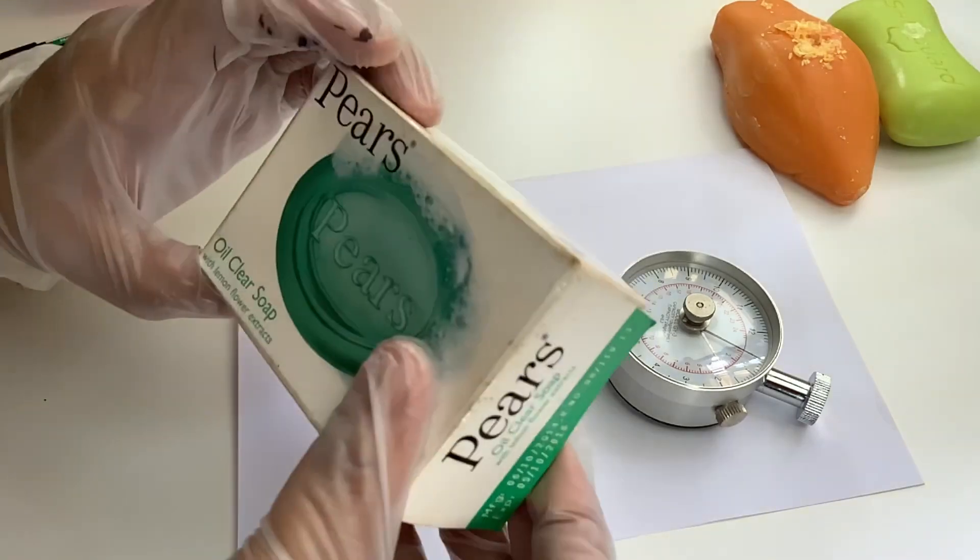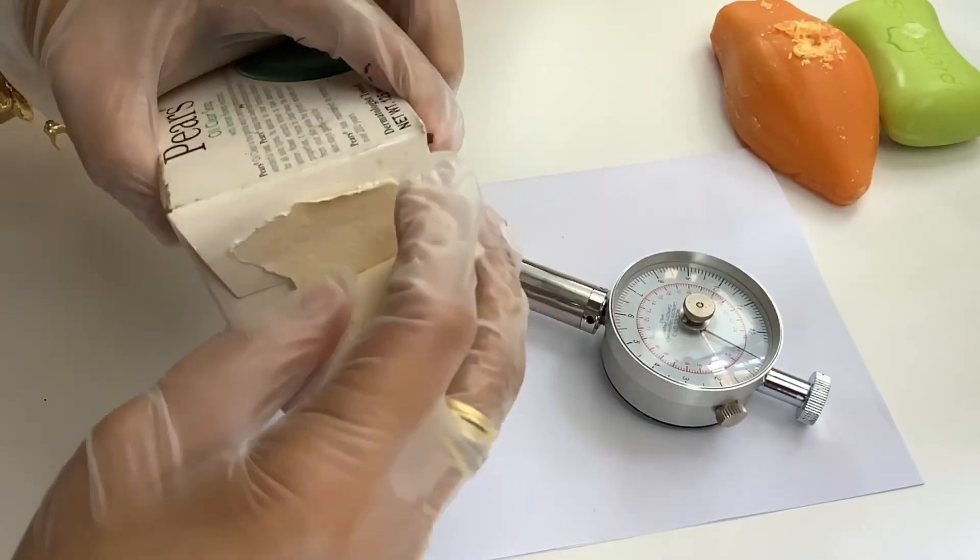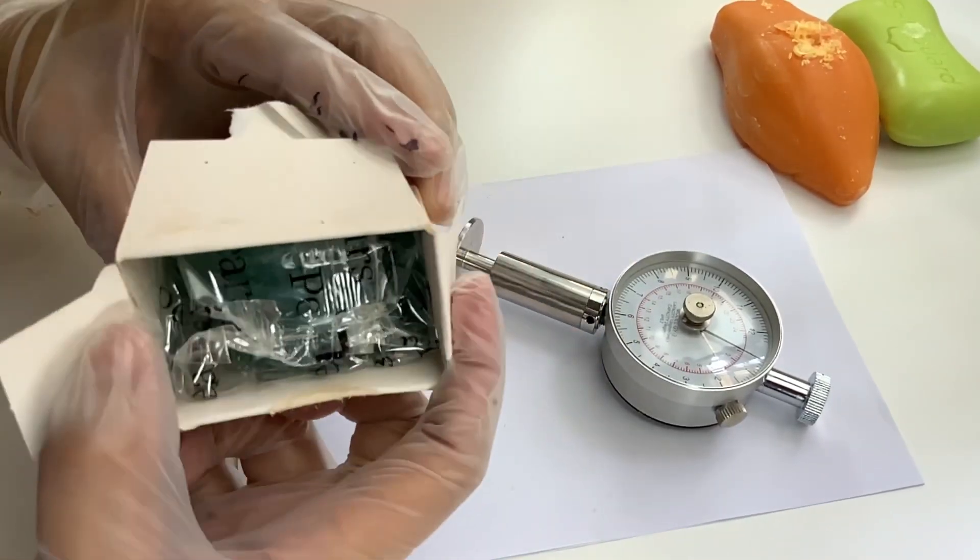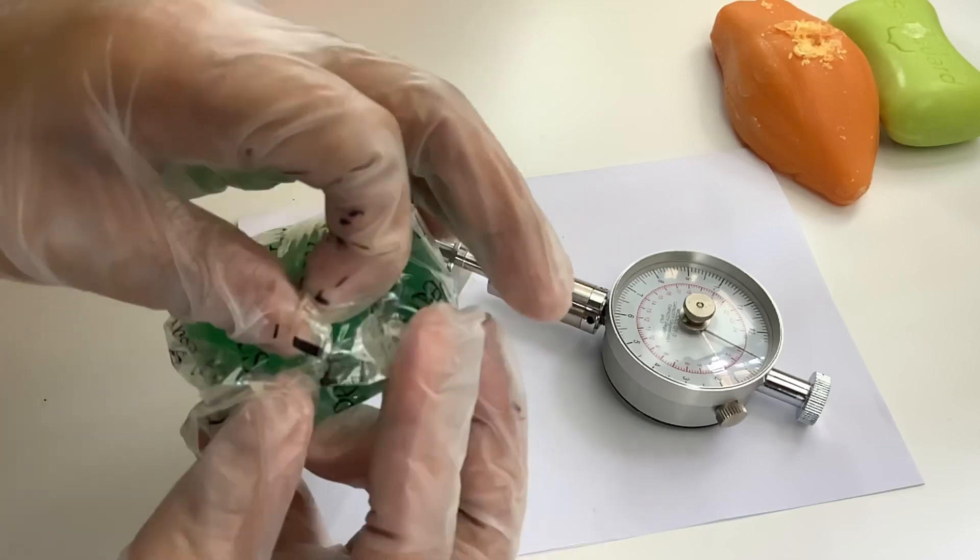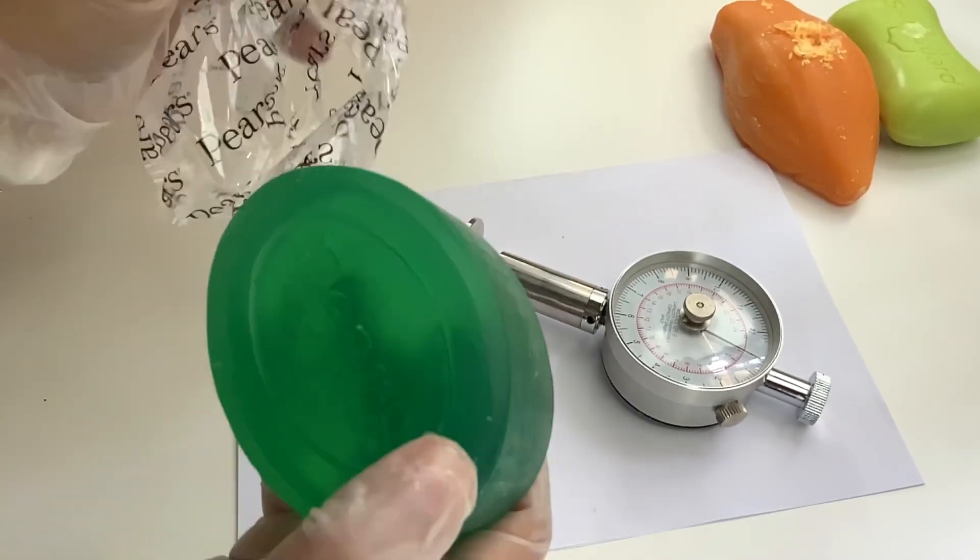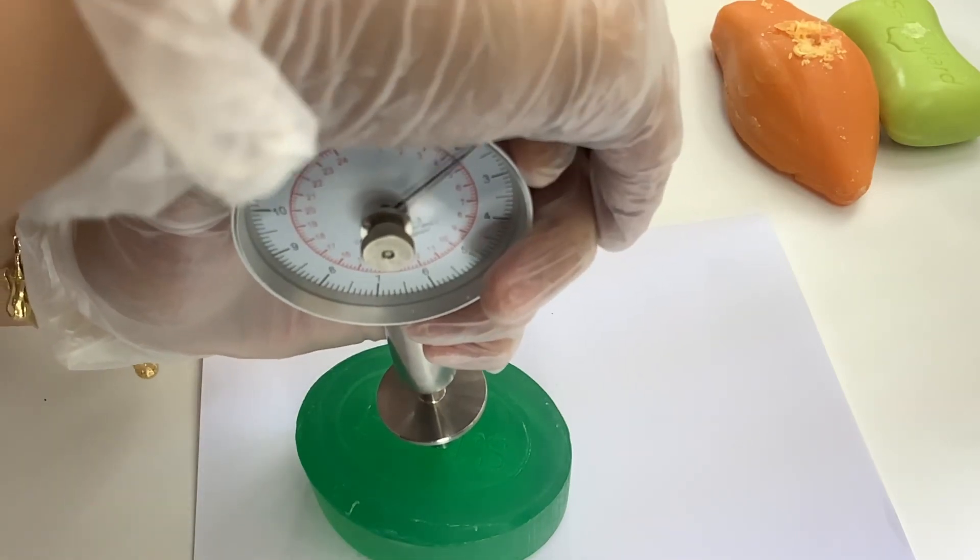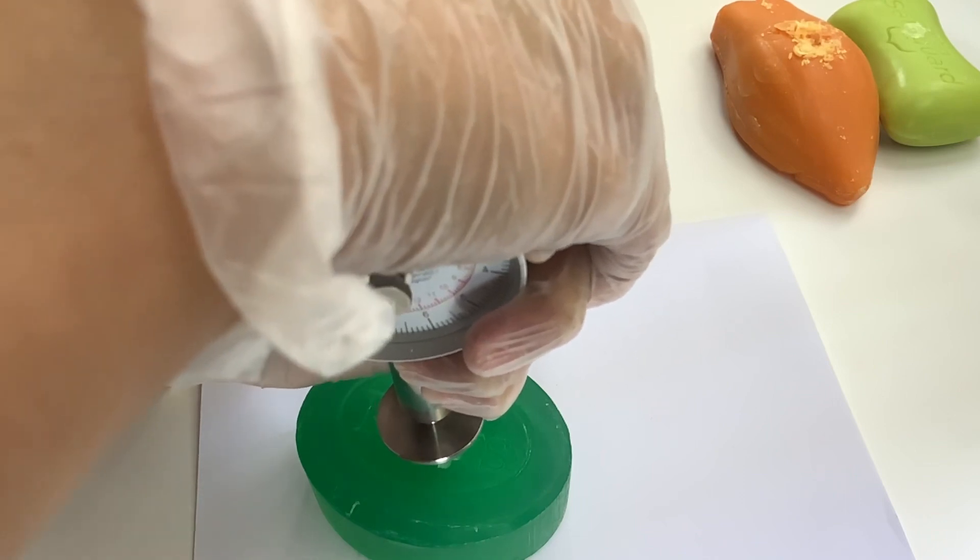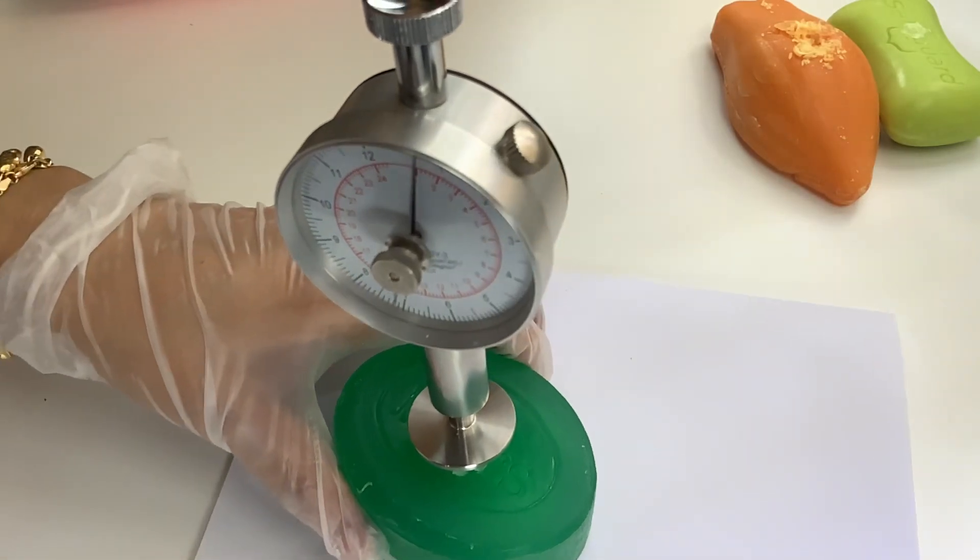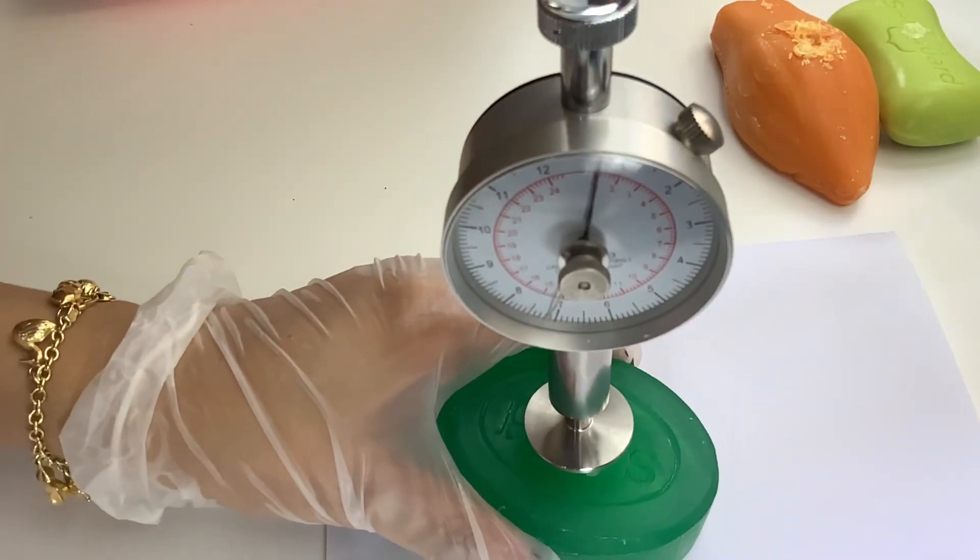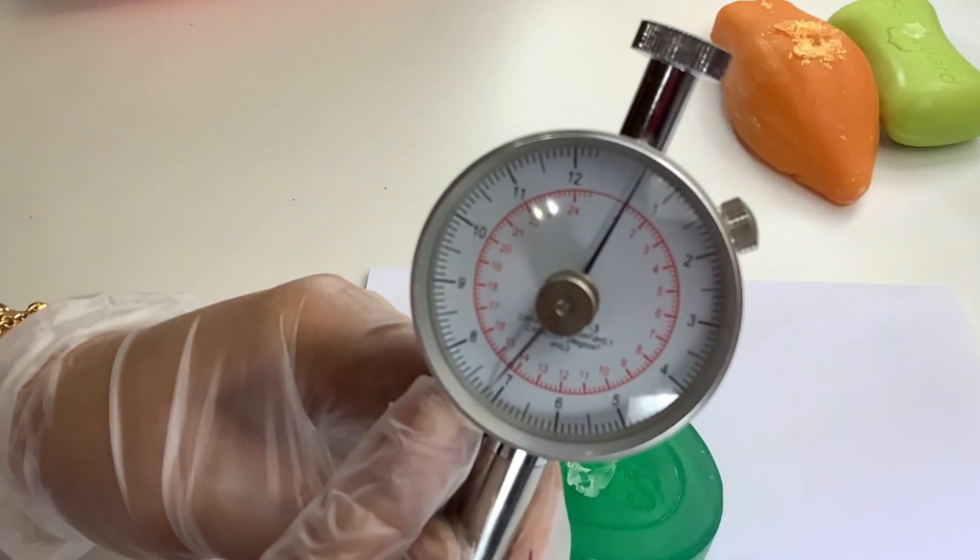Now let's move to Pear's oil clear soap with lemon flower extract. This is a transparent soap and it contains high amounts of sorbitol to make it transparent. For the base it uses sodium palm kernelate and a combination of sodium palmitate and sodium stearate. It also contains high amount of propylene glycol. 14.4.